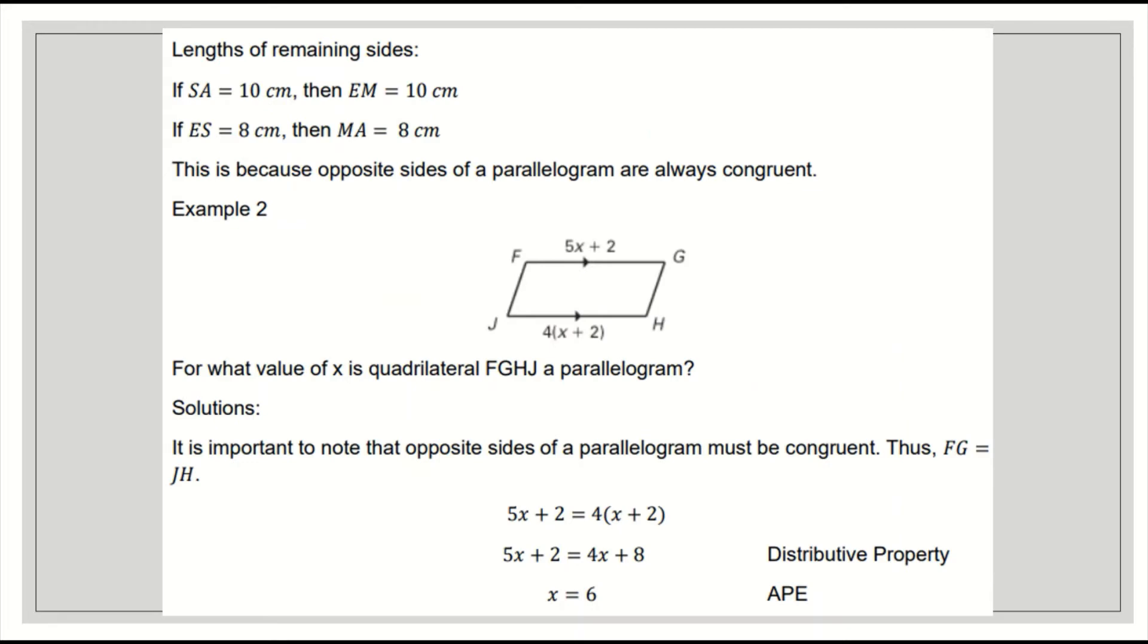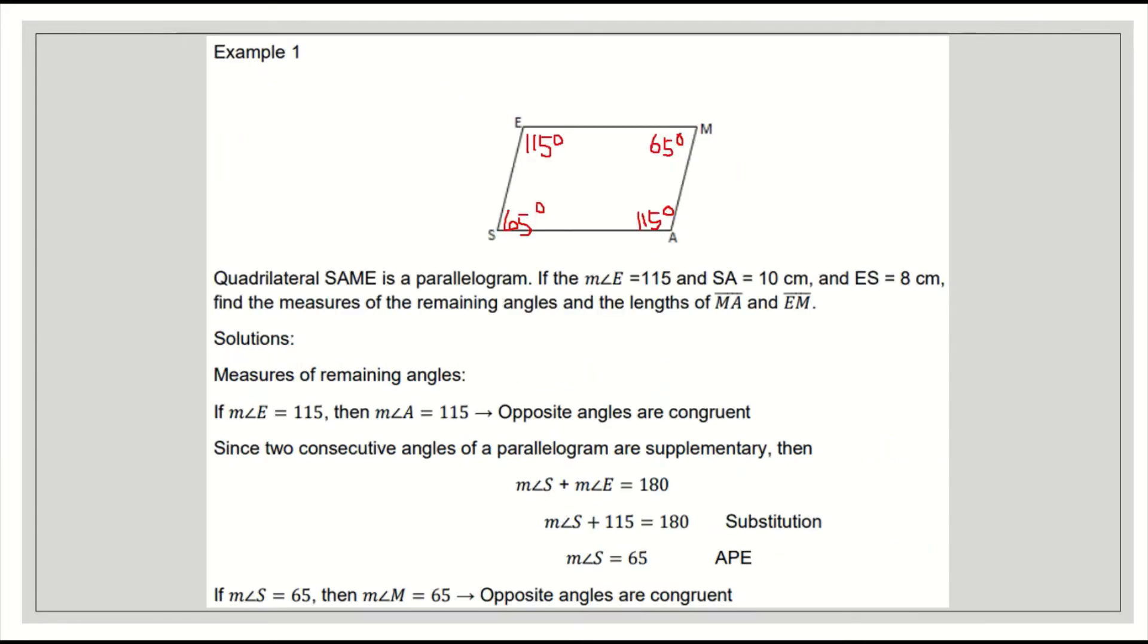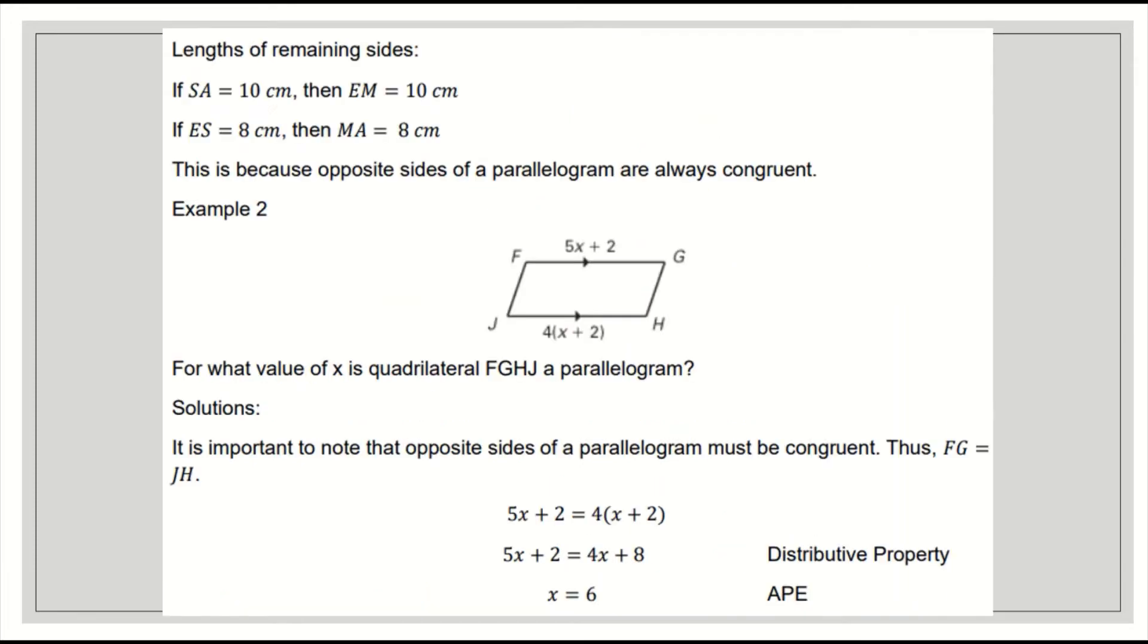Next, the length of the remaining sides. If SA is 10, of course EM is 10. If ES is 8, of course MA is 8 as well. This is because opposite sides of a parallelogram are always congruent.